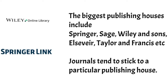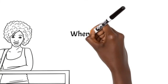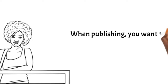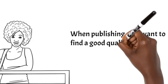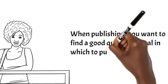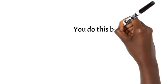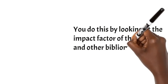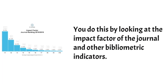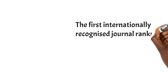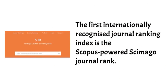Journals tend to stick to a particular publishing house. When it's your time to publish, you want to find a good quality journal. How do you decide what a good quality journal is? You do this by looking at the impact factor of the journal and other bibliometric indicators. The first internationally recognized journal ranking index is the Scopus-powered Scimago Journal Ranking.